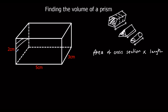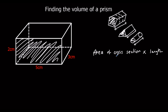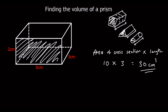So here we're going to take this as the front of the shape. The area of the cross section is 2 times 5, which is 10 centimeters squared. So 10 is the area of the cross section, and it goes back 3. So it's 10 times 3, which is 30. It's volume, so it's measured in cubes — in this case, centimeters cubed. That works for any prism.